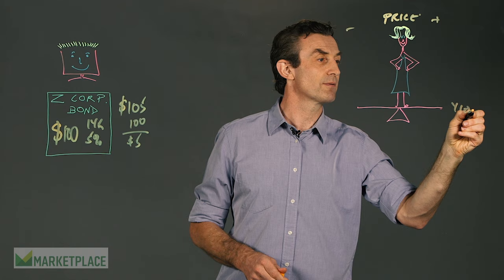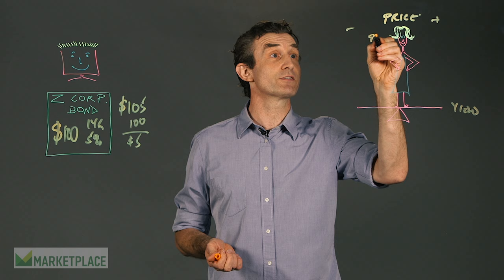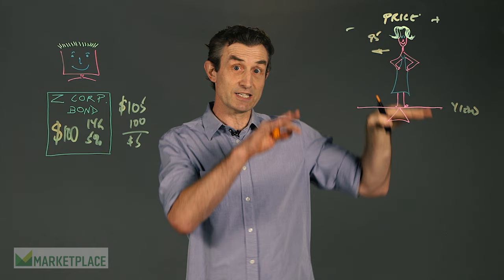All right, so say June has managed to bargain John down to $95 for this $100 bond. Well, it means that she's moving down the scale here, down the seesaw. And it's going to tilt like this, of course, like any seesaw does, which means you're going to see the yield go up like this.